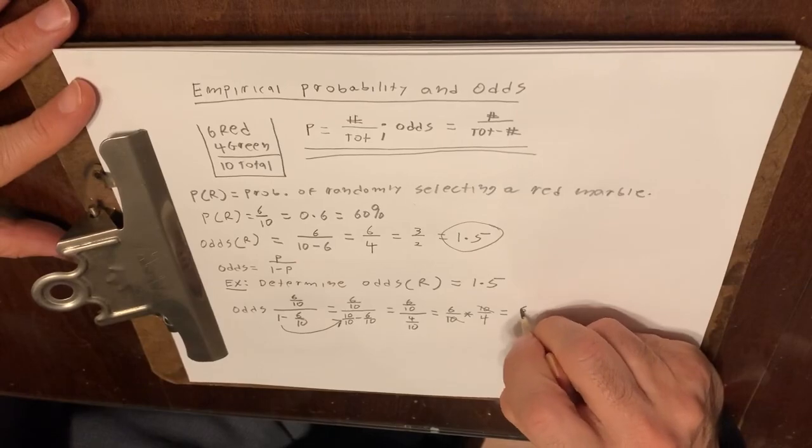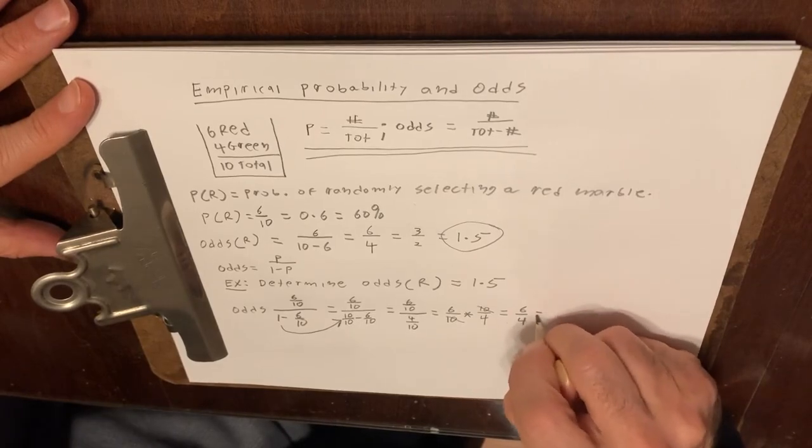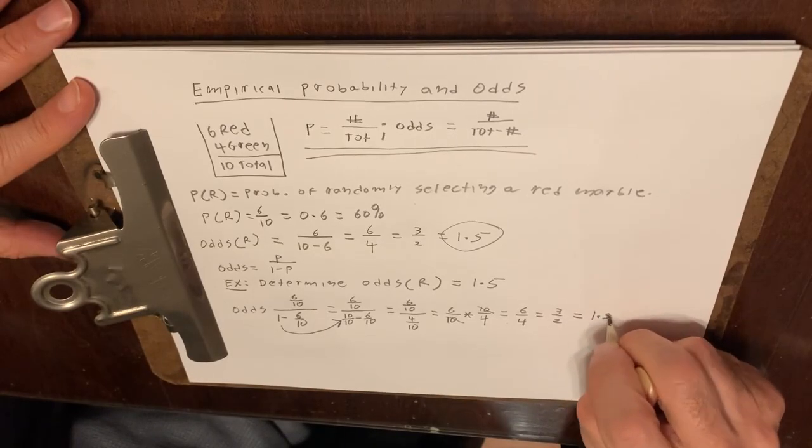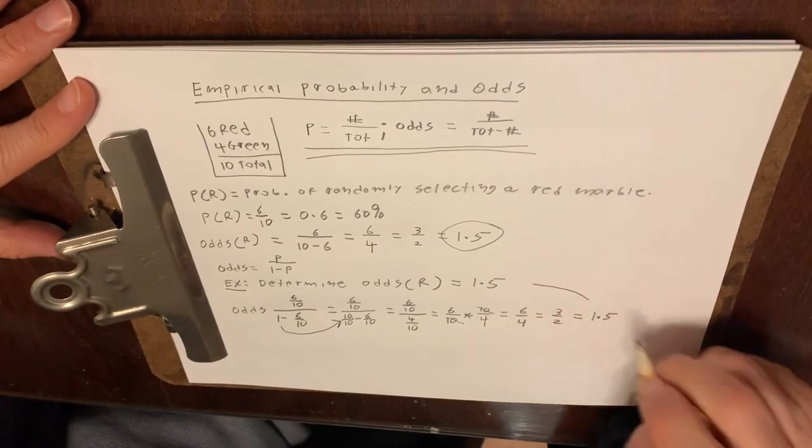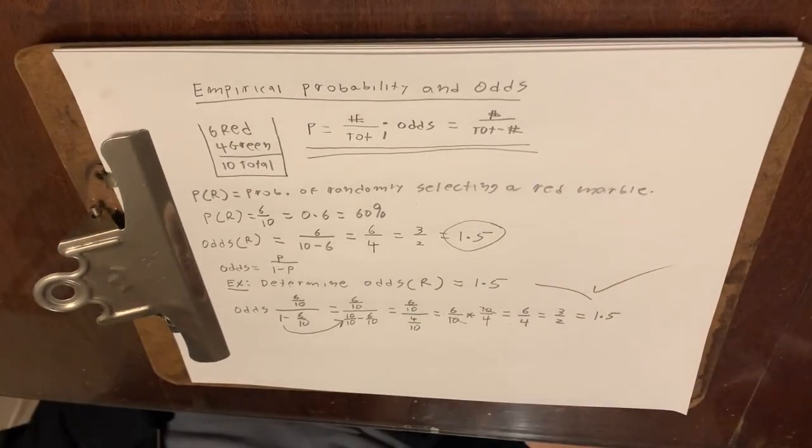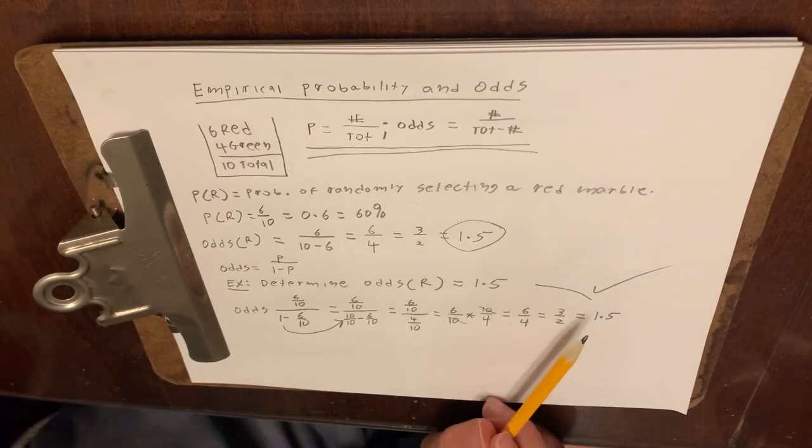And you'll notice that these 10s cancel because 10 over 10 is equal to 1. And this gives us 6 fourths, which is the same as 3 halves, which is the same as 1.5. And you'll notice these are equal, and I can put a little check to show that we have in fact got the same answer.